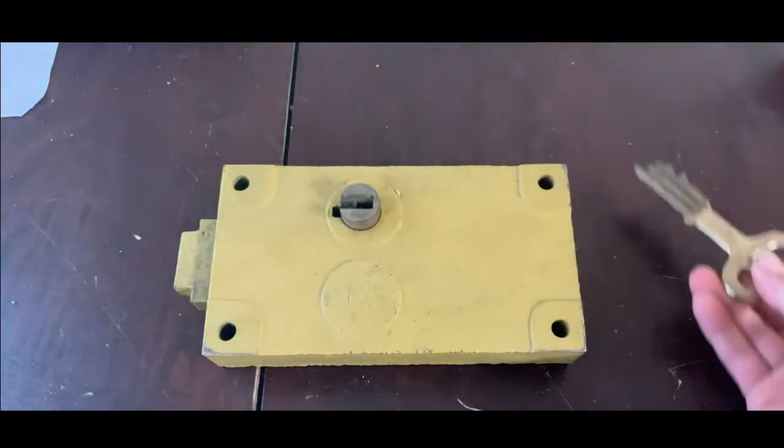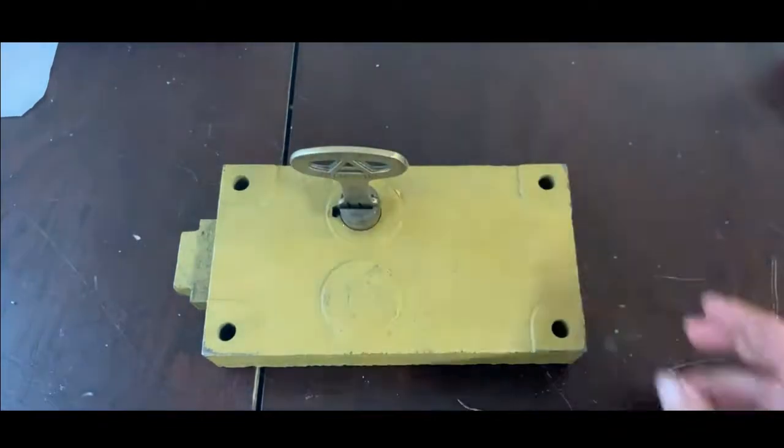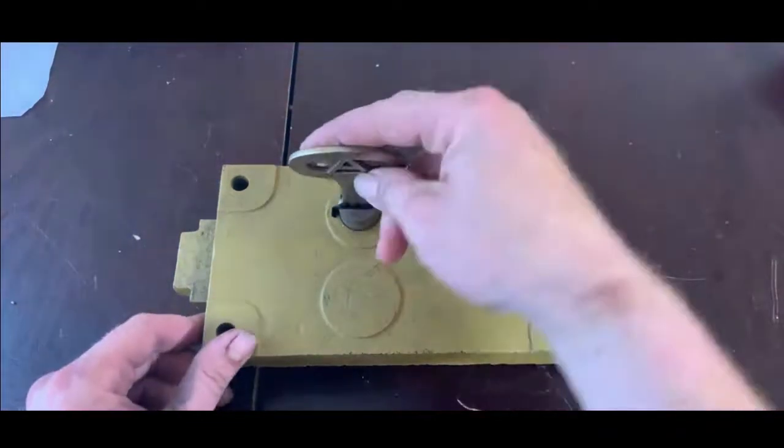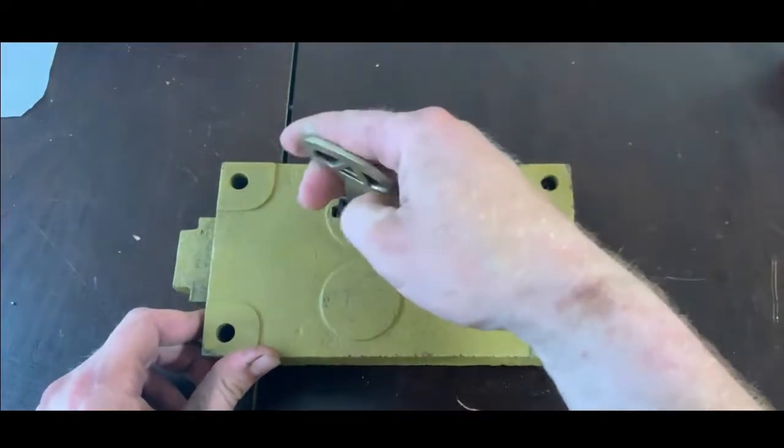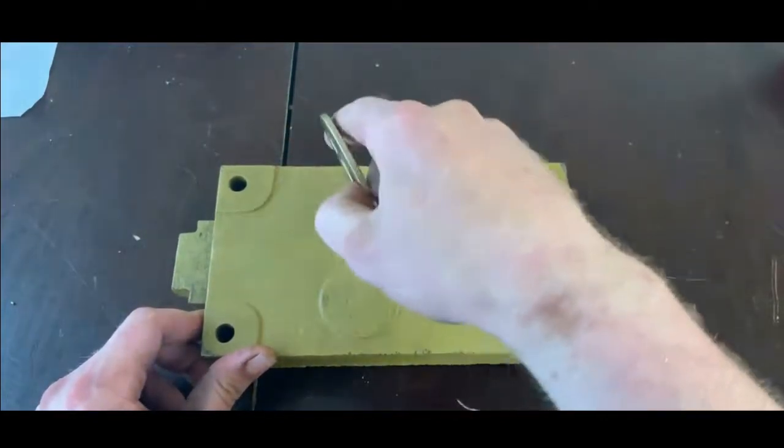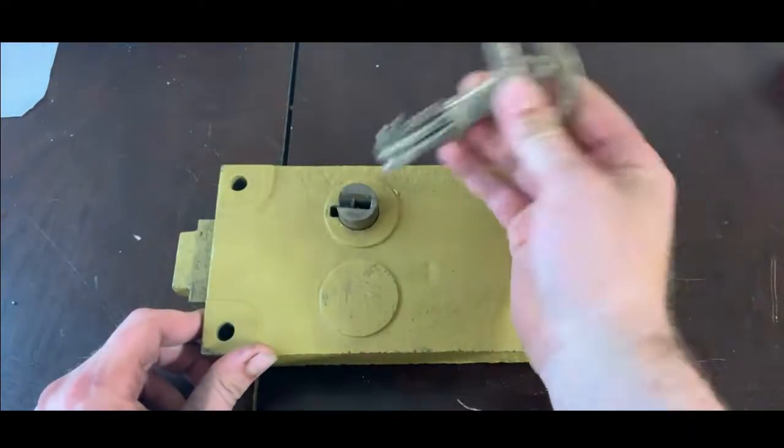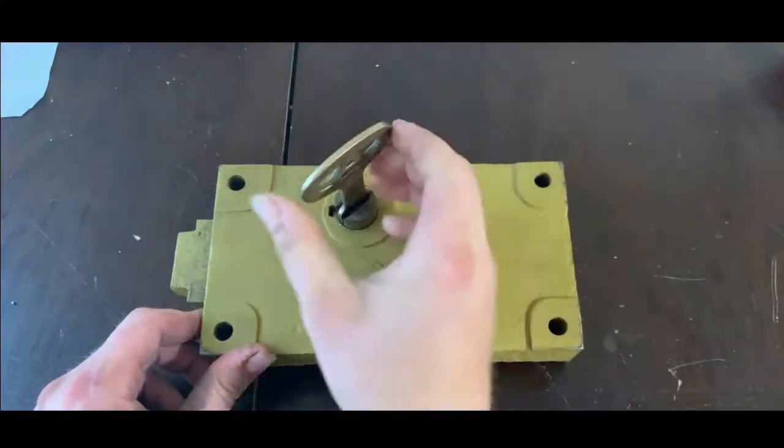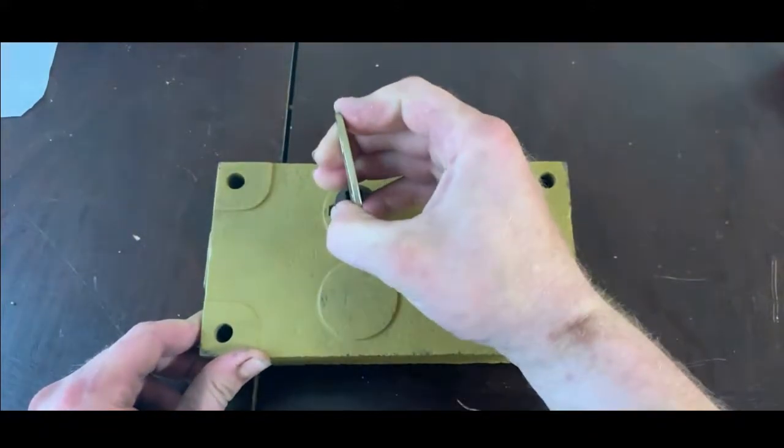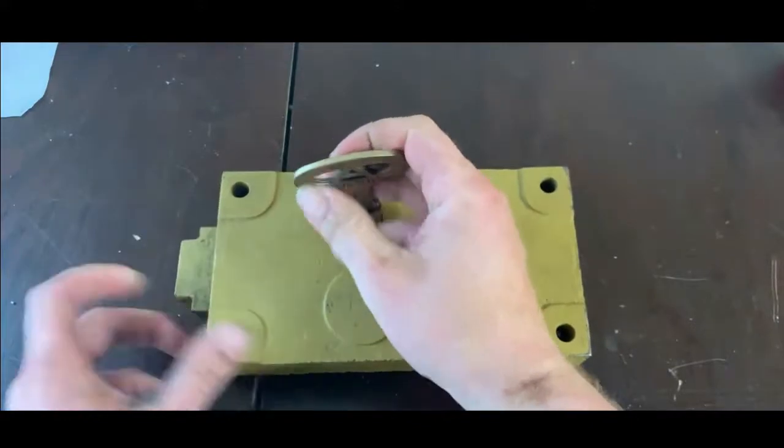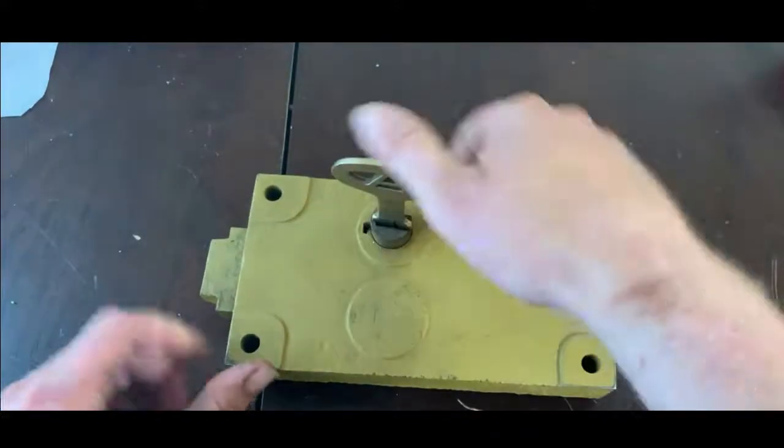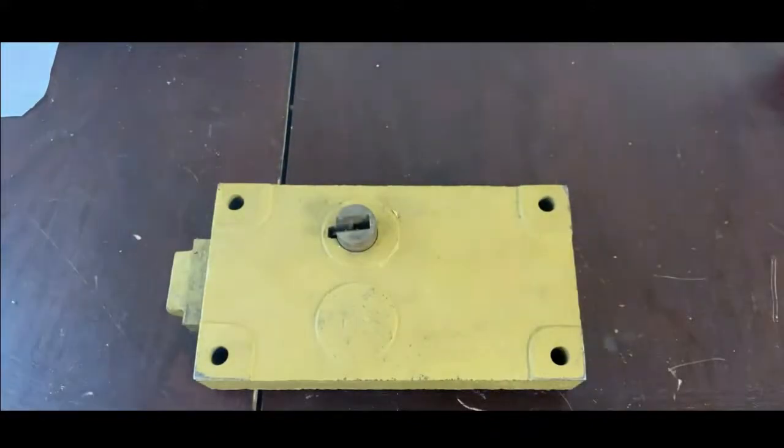I think this has like six levers in it. We'll take it apart here in just a second so you can see how it works. You rotate it counterclockwise, it'll rotate one full time where you can remove the key, and then you just keep going and it retracts the lever or the locking mechanism.